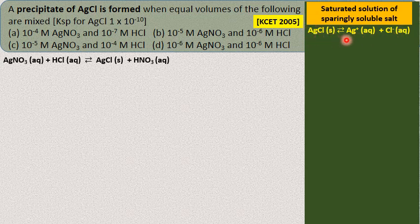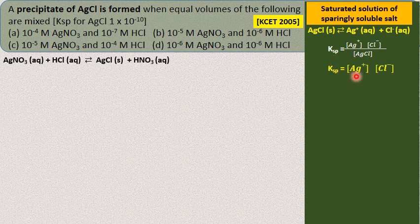Under equilibrium, the solid silver chloride is in equilibrium with its ions in solution. For this equilibrium, the equilibrium constant K equals the molar concentrations of the products divided by that of the reactant. The reactant is a solid, so its concentration is taken as one. Therefore, Ksp becomes the product of the molar concentrations of the ions — in this case, Ag⁺ and Cl⁻. This equilibrium constant is called the solubility product.